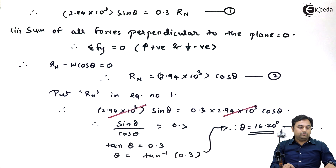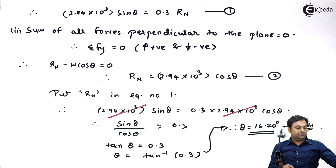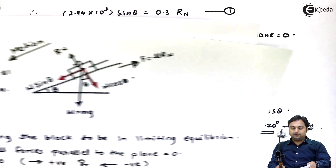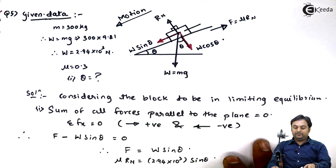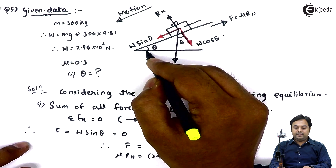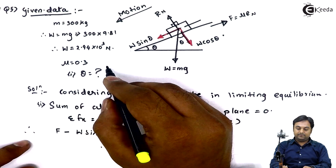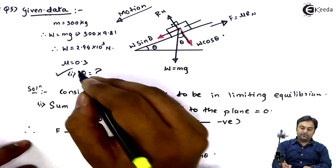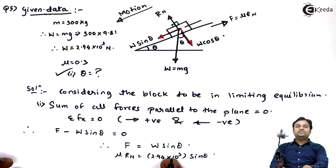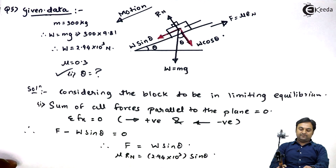So looking at this question, they were asking us to calculate the value of the inclined plane angle, and we have found it as 16.7 degrees. With this we complete the problem.